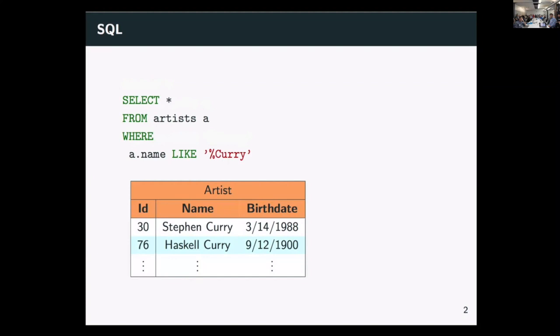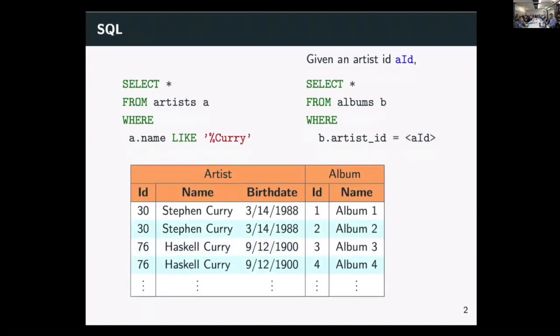Now, if you want to go ahead and look up musical albums by those artists, you might say, given an artist's ID, I want to look at all the albums whose artist's ID matches whichever one. So we're going to put 30 or 76 in this case. And if we do that, we'll get some other data back. Again, this returns a table. This also returns a table here. And so we can see you have two things who say the same thing. And now we want to put them together.